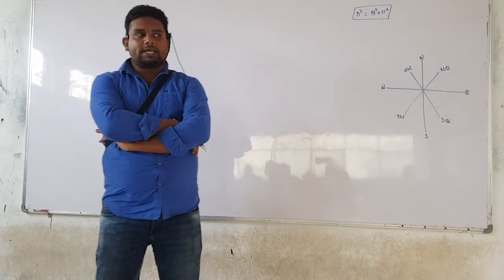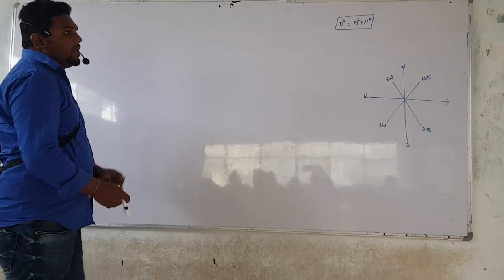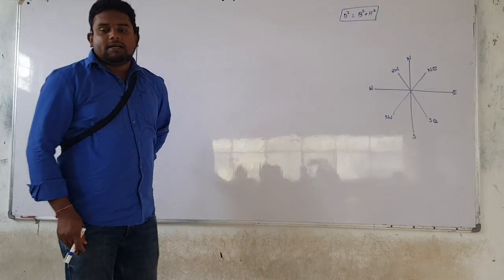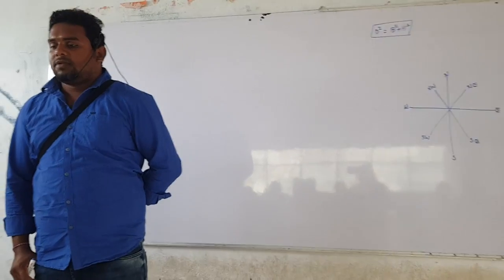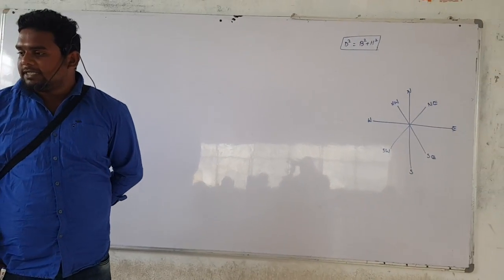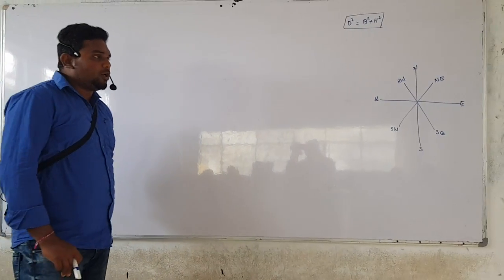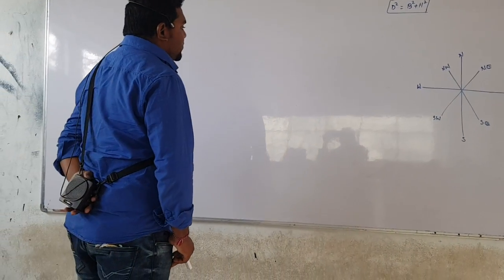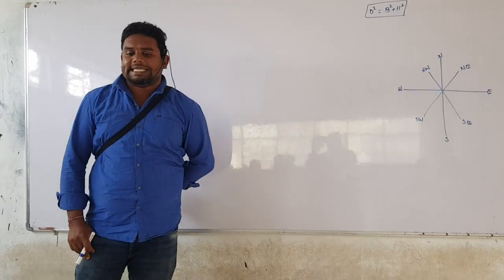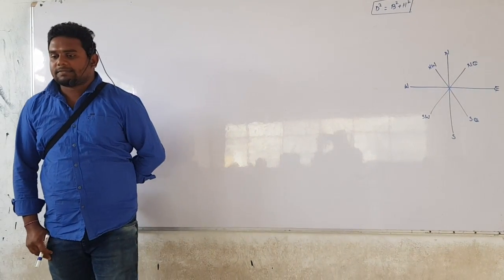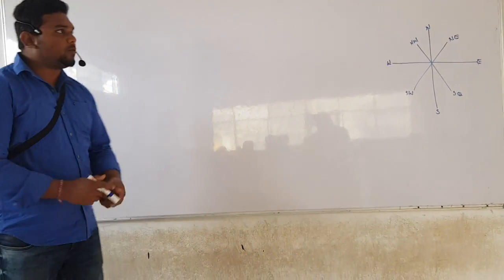Starting from his house, a person travels a distance of seven kilometers towards east.